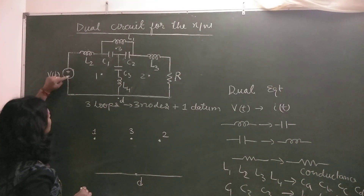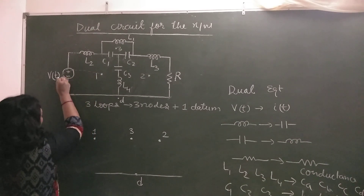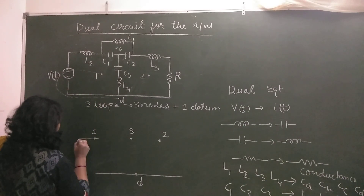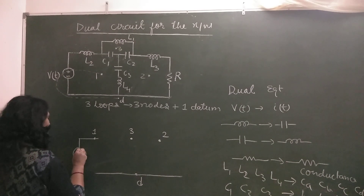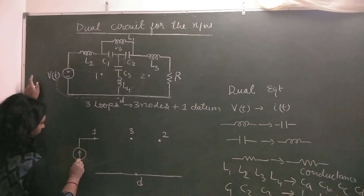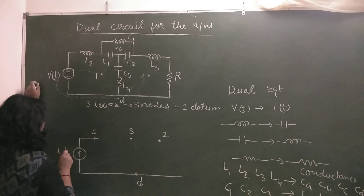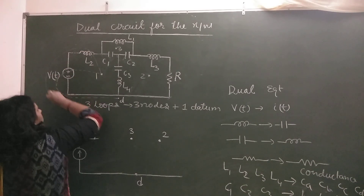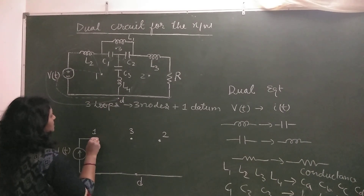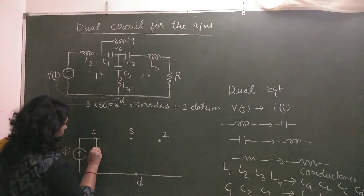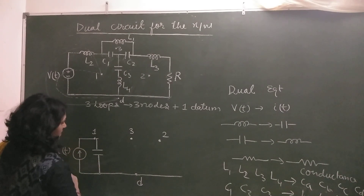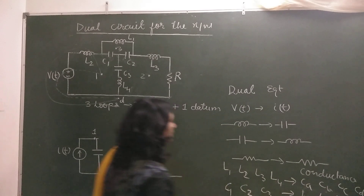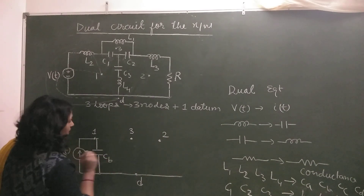Now we will consider each element one by one and find where they are falling. Take VT — it is falling between node 1 and datum (D). So between 1 and D there is a current source It, and the direction of current will be upward. The next element is also between 1 and D, and it is an inductance L2, so I am replacing it with capacitance CB.